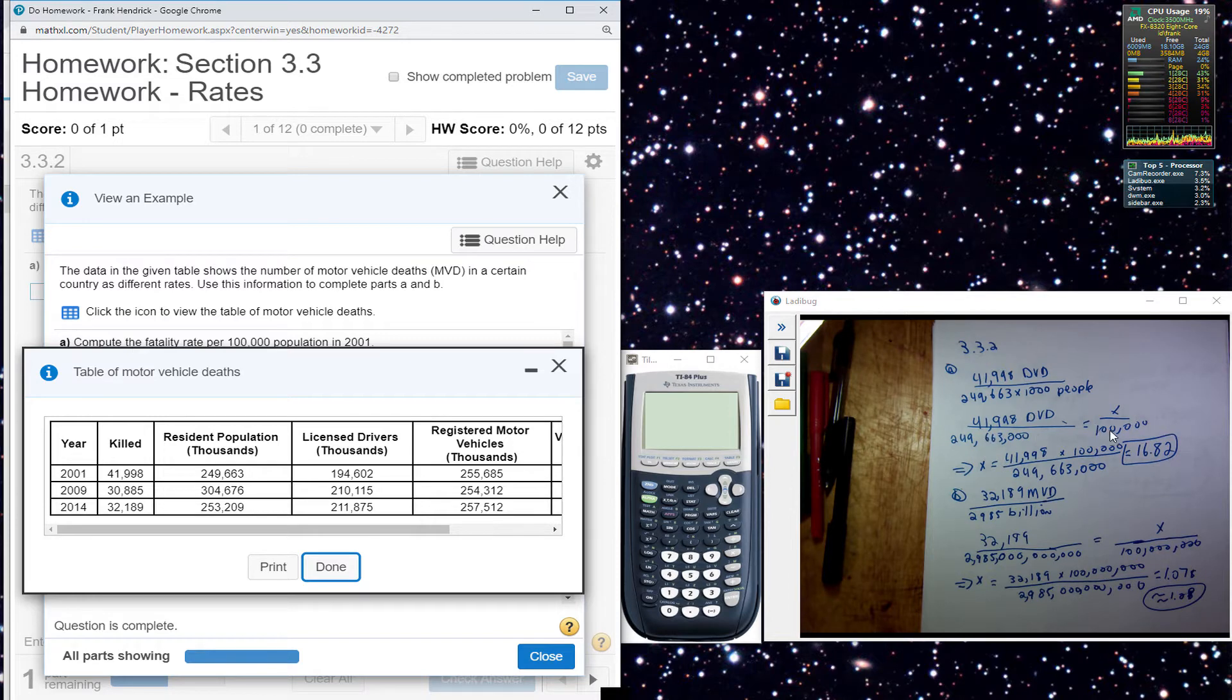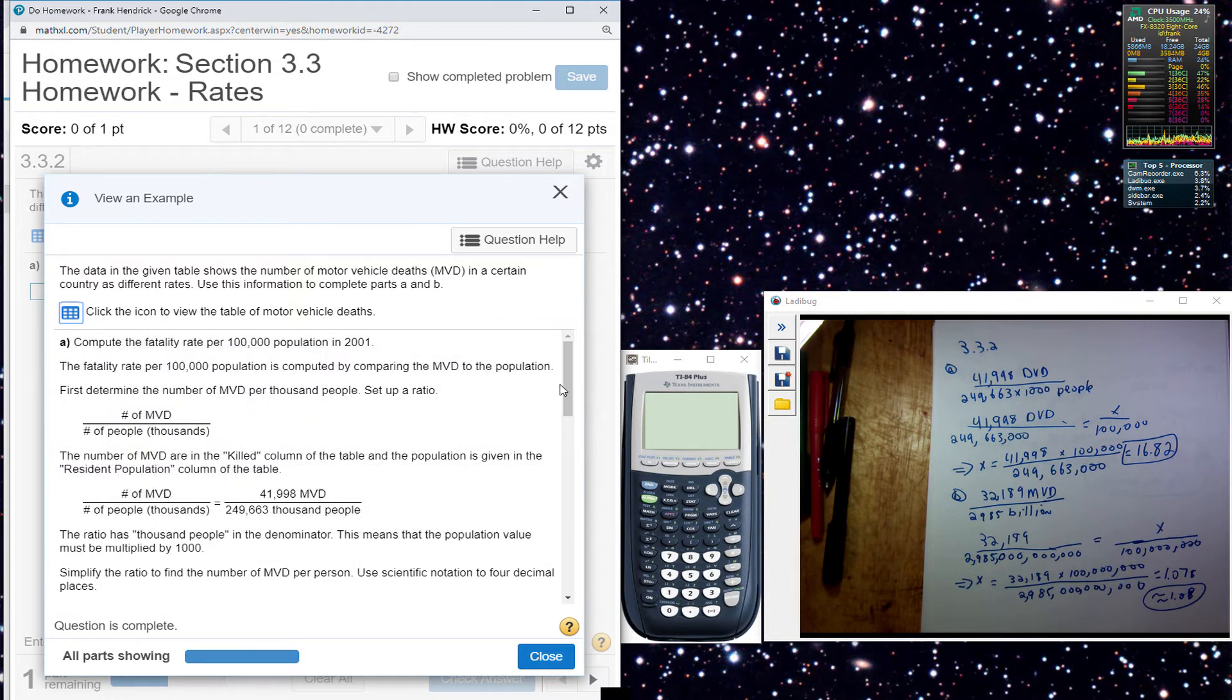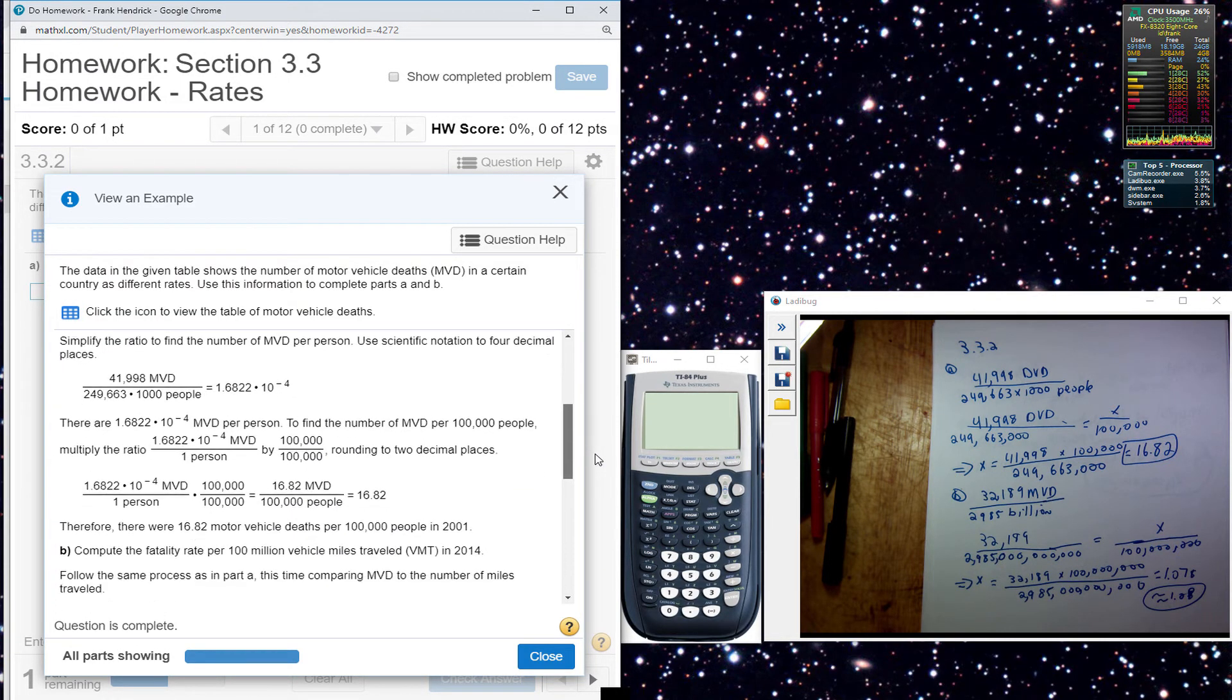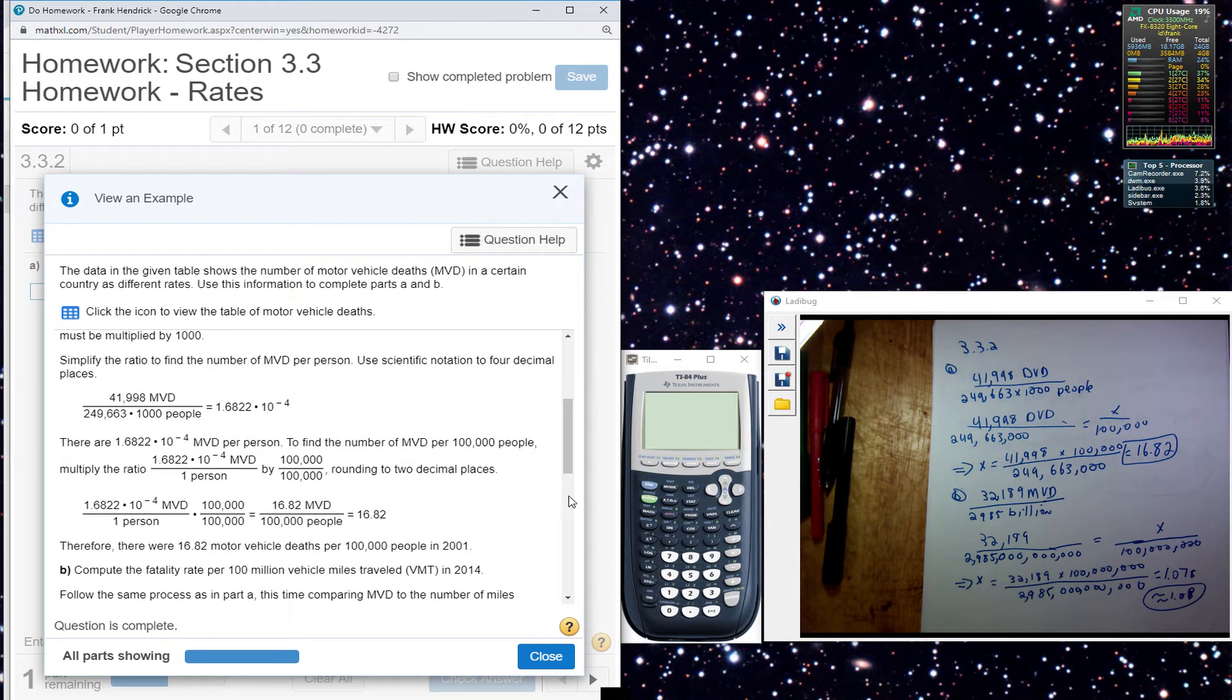And they want to know how many deaths is that per 100,000. So I have a proportion here I set up and I cross multiply and divide. And it gives me 16.82. There, and there's a 16.82.